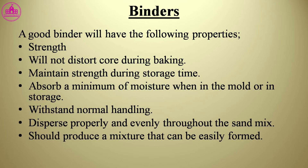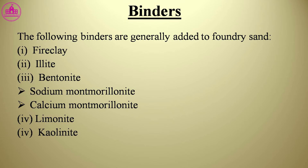A good binder will have the following properties: strength; will not distort the core during baking; maintains strength during storage; absorbs a minimum of moisture when in the mold or in storage; withstands normal handling; disperses properly and evenly throughout the sand mix; and produces a mixture that can be easily formed. The following binders are generally added to foundry sand: fiery clay, bentonite, sodium montmorillonite, calcium montmorillonite, limonite, and kaolinite.